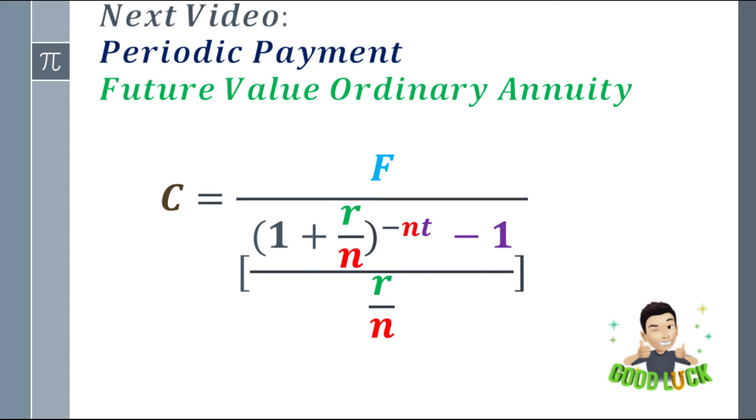How to find the cash flow for future value ordinary annuity. The formula is: cash flow equals, in the numerator, future value over the quantity as a fraction. In the numerator of the new fraction, 1 plus r over n to the nt minus 1, over r over n.